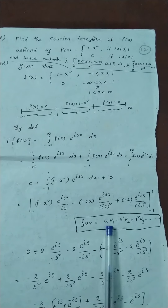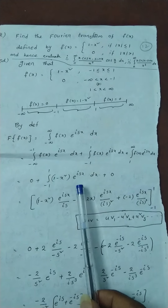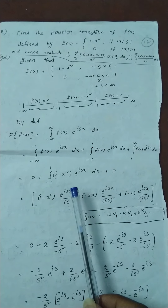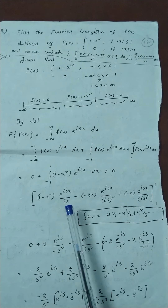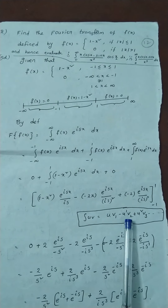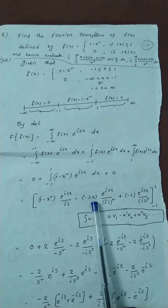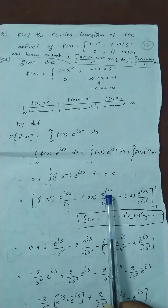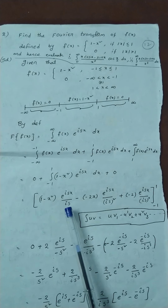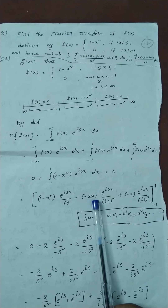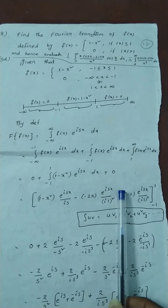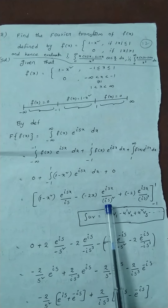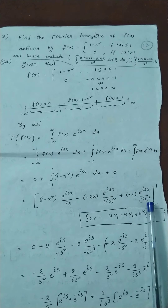Applying the formula: u times v1 means (1 minus x squared) times the integral of e to the power isx, which is e to the power isx divided by is. Then minus u-dash, where u-dash is d/dx of (1 minus x squared) which equals minus 2x, times the integral of the previous term giving e to the power isx divided by (is) squared. Plus the second derivative of u which is minus 2, times the triple integral of v giving e to the power isx divided by (is) cubed. The limits are minus 1 to 1.